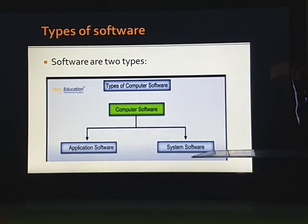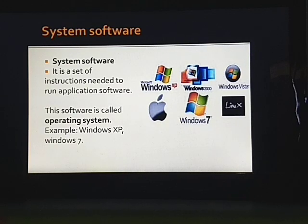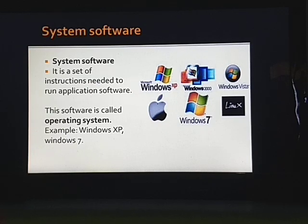What is system software? This is the operating system. Without system software, the application software will not work. System software is the set of instructions needed to run application software — it is the operating system of the computer. For example, Windows XP, Windows 7, Mac, Linux. After connecting different hardware units, we have to install system software first. Without system software, the computer will not switch on.